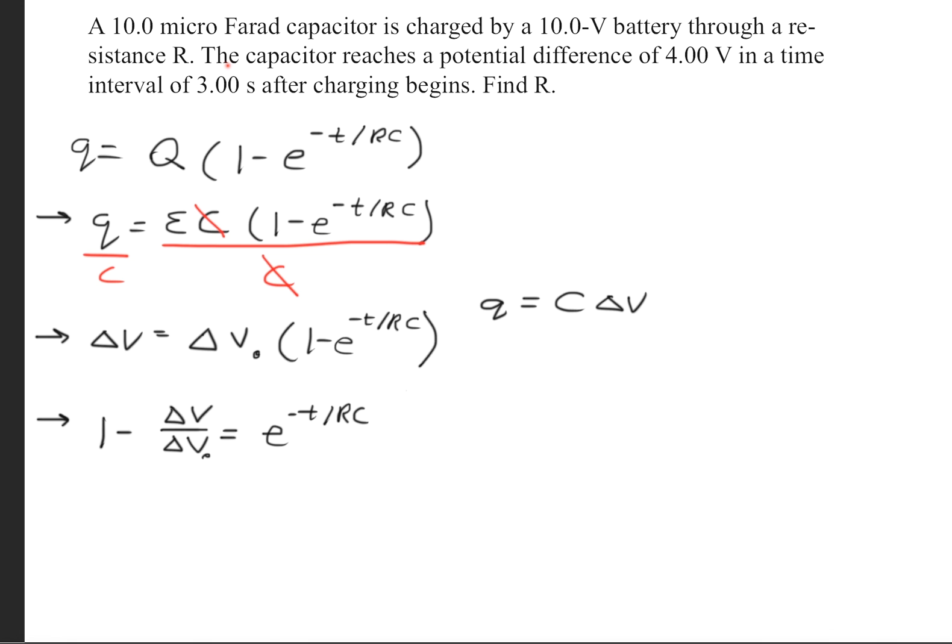Now the next thing we're going to do is divide delta V0 on both sides, and then we're going to move the 1 over so that we isolate the exponential. What we'll do now is get a common denominator and condense this equation.